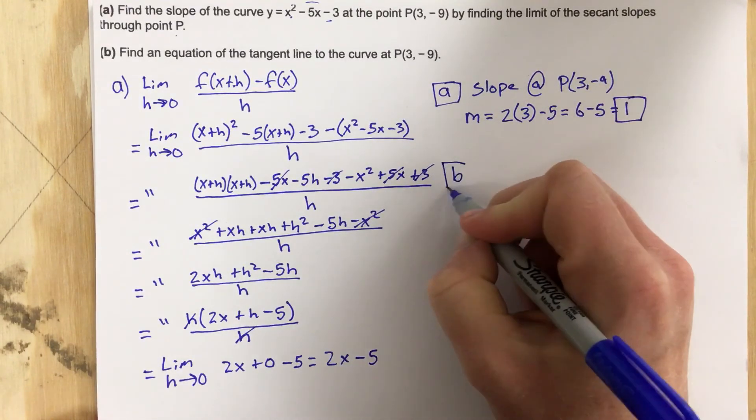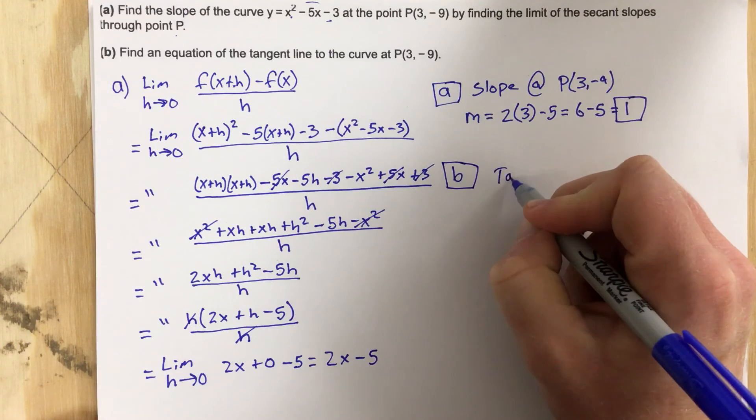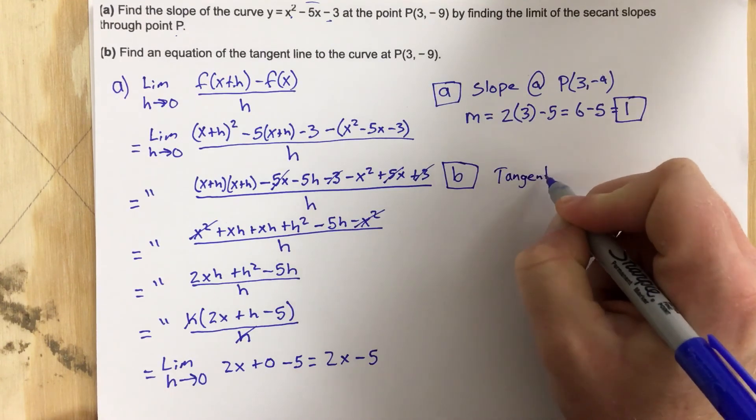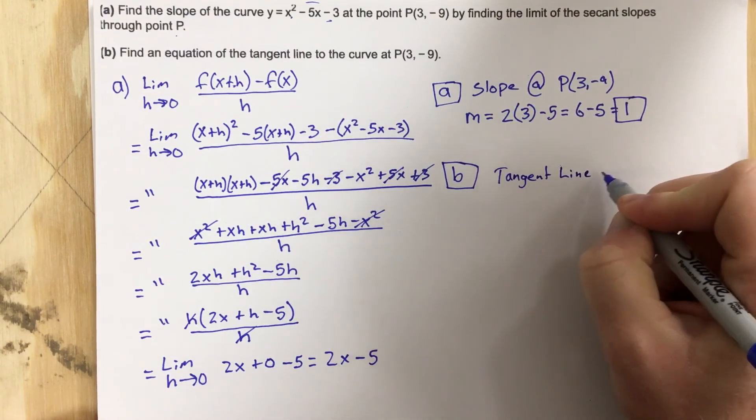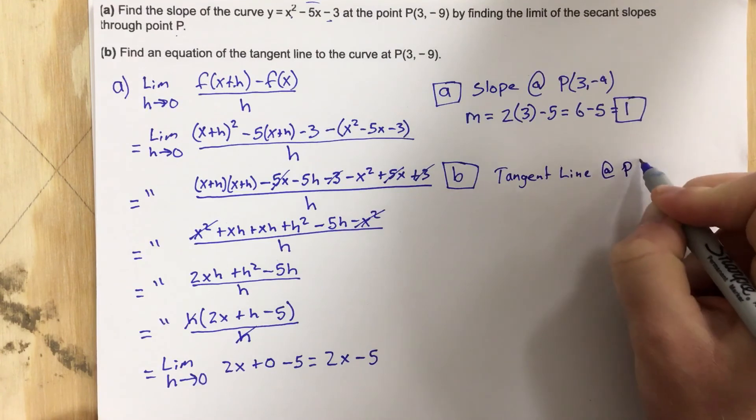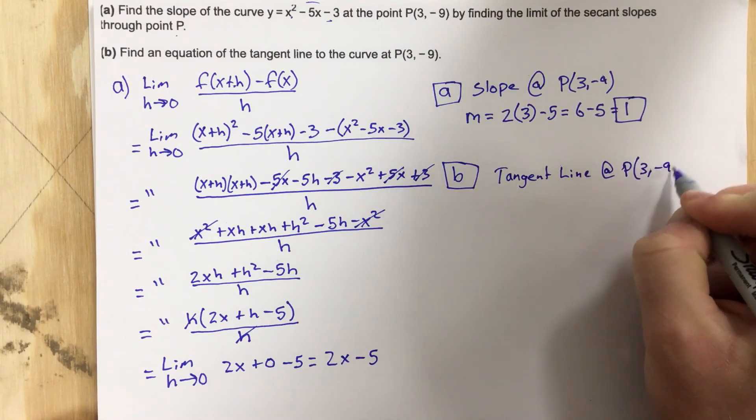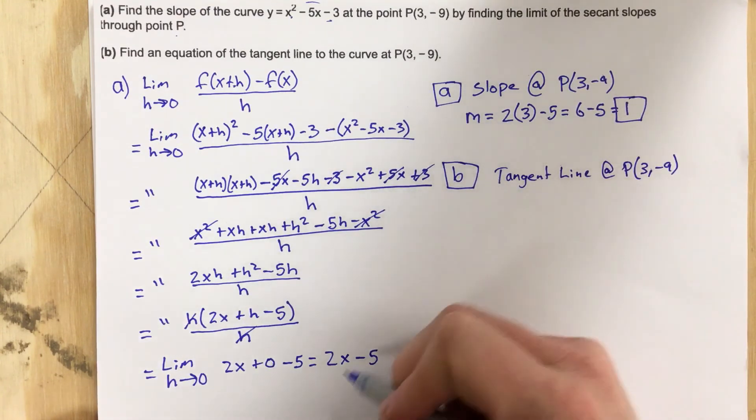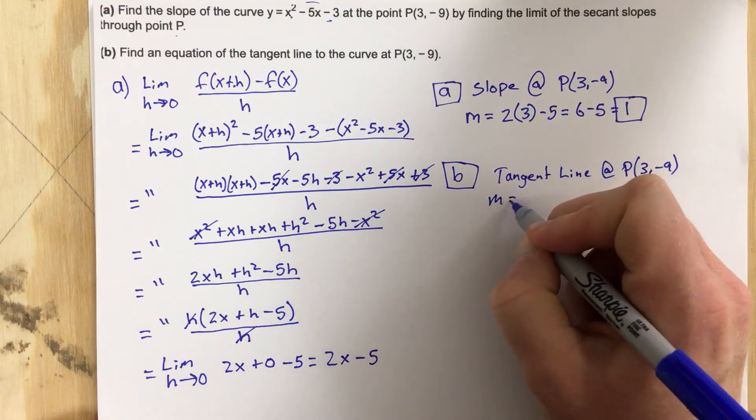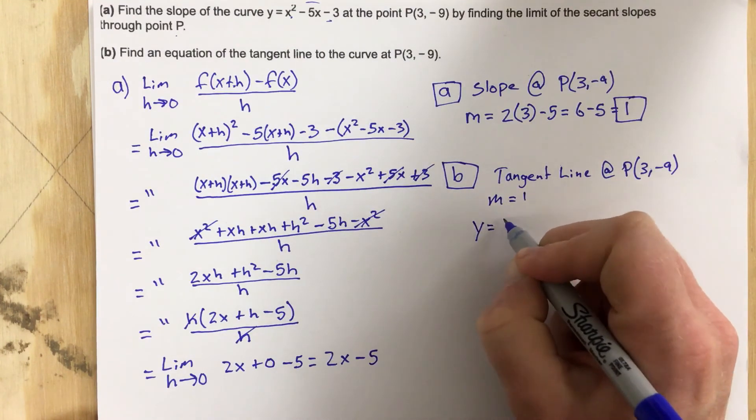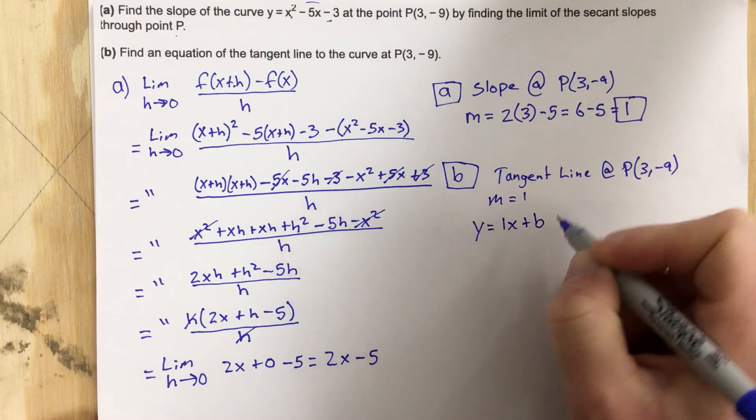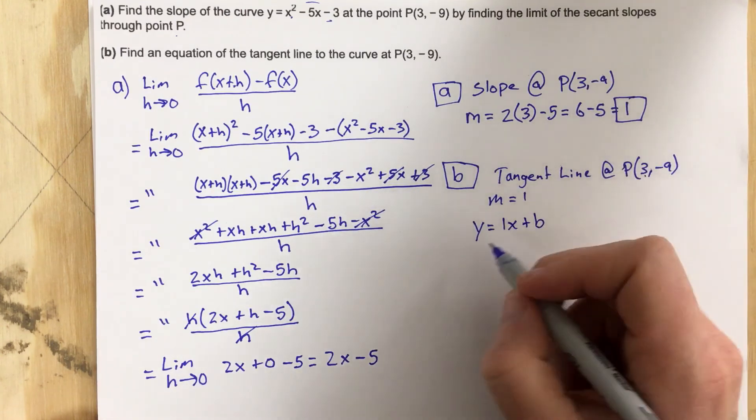Now part B, they want us to find the tangent line at P(3, -9). So we take the slope, which is m equals 1, and we say y equals 1x plus b. Plug in our coordinate 3 and -9...